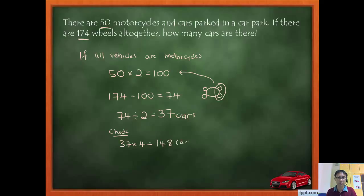Now how many motorcycles do I have? If I have 37 cars, 50 minus 37, that will give me 13. So 13 motorcycles, 13 times 2 equals to 26 motorcycle wheels. So these are car wheels. So altogether, how many wheels do I have? So I'll take 148 plus 26, and that will give me 174. So I'm correct. So the 37 cars is correct. Okay, so this is how we do the make a supposition method.